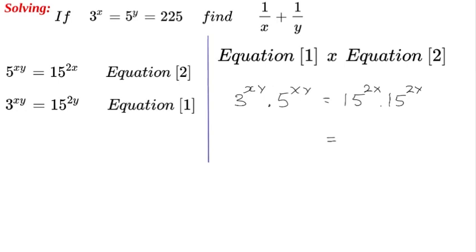3 by 5, which is 15, all to the power of xy. And on the right-hand side, we can group together the exponents with the addition rule. We can put it as 15 to the power of 2x plus 2y, or 2 times (x plus y).